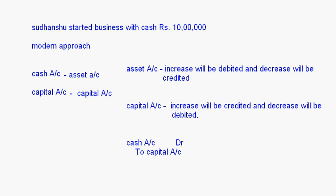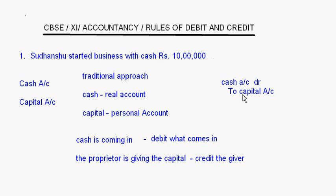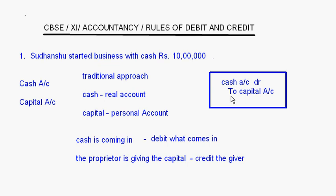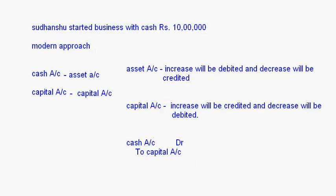You see here that whether you follow the traditional approach or the modern approach, the journal entry — the debit and credit part — is the same. When we write 'to capital account,' that means it is a credit. Cash is debited and capital is credited. Whether you follow the traditional approach or the modern approach, the account to be debited and the account to be credited will always be the same.